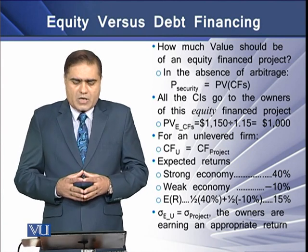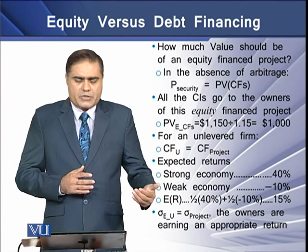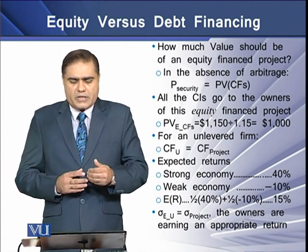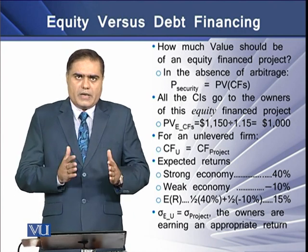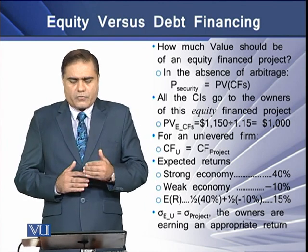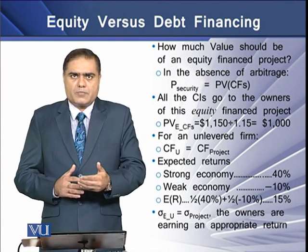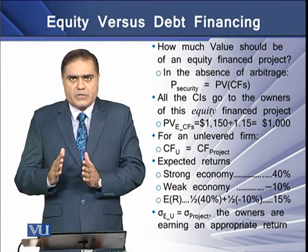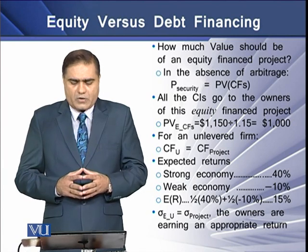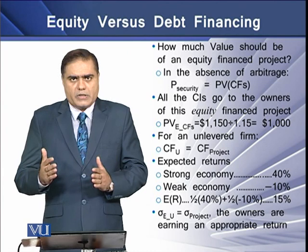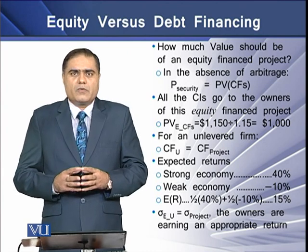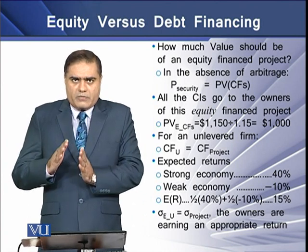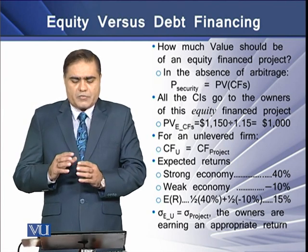How much value should an equity-financed project have? In the absence of arbitrage, the price of any security equals the present value of the cash flows it generates. All cash inflows go to the owners of the equity-financed project. The present value of equity-based cash flows equals $1,150 divided by the overall cost of capital, giving a present value of $1,000. For any unlevered firm, its unlevered cash flows equal the cash flows generated by the project.